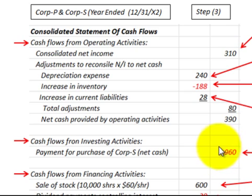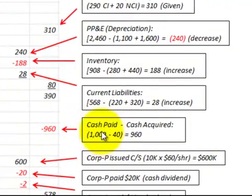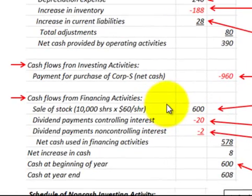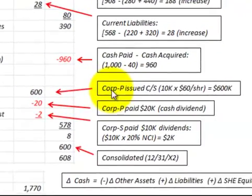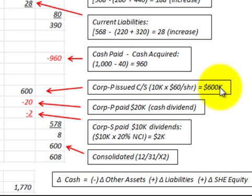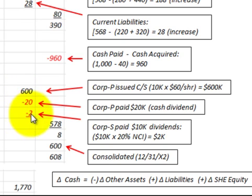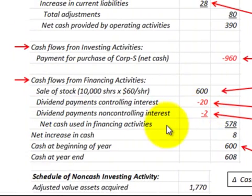For cash flows from investing activities, the payment for the purchase of Corporation S — the net amount — is the cash paid of $1,000,000 less the cash acquired from the subsidiary's balance sheet of $40,000, giving a net amount paid of $960,000. For financing activities, the parent corporation issued 10,000 shares of common stock at $60 per share for $600,000. Corp. P also paid a $20,000 cash dividend, and the subsidiary's non-controlling interest paid a dividend of $10,000, but since they only have a 20% interest, we record only $2,000. Net cash used in financing activities totals $578,000.